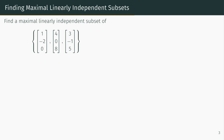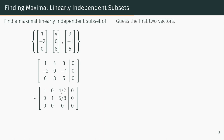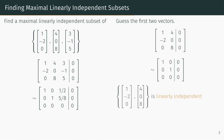What if we wanted to find a maximal linearly independent subset of a set of linearly dependent vectors? That is, a subset of linearly independent vectors that's as large as possible. Consider the given set of vectors, which we know by the standard procedure to be linearly dependent. We might guess that the first two vectors are linearly independent, and indeed, putting them in an augmented matrix and row reducing, we see that the set consisting of only the first two vectors is linearly independent. Since adding the last vector to this set would make it linearly dependent, this is the largest subset that is linearly independent. Therefore, it is a maximal linearly independent subset.